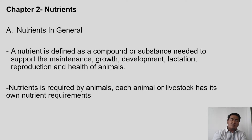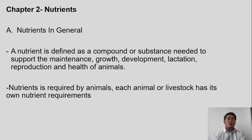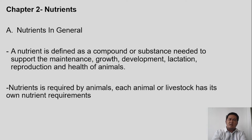So now we will be talking about nutrients in general. What is a nutrient? A nutrient is defined as a compound or substance needed to support the maintenance, growth, development, lactation, reproduction, and health of animals. A nutrient is a basic compound or substance needed by animals in terms of their maintenance, growth, and development.